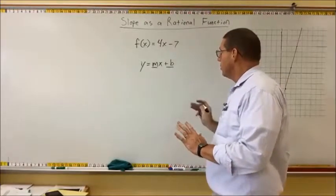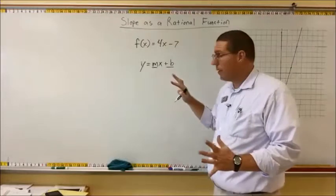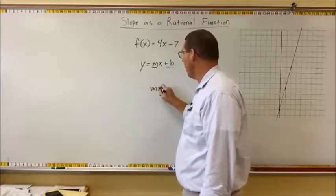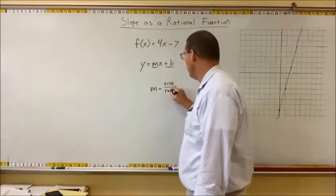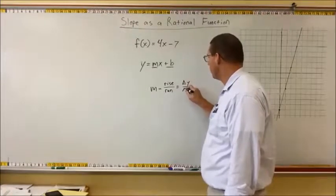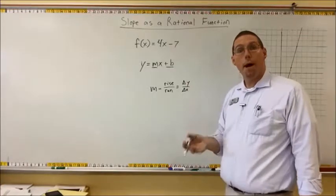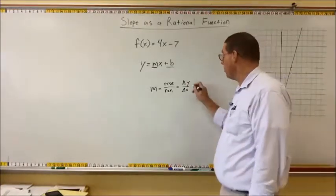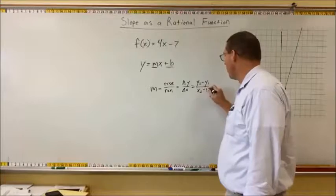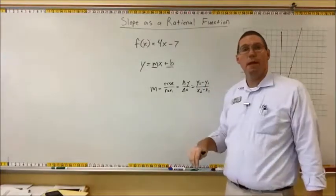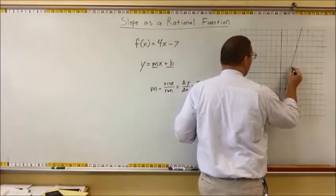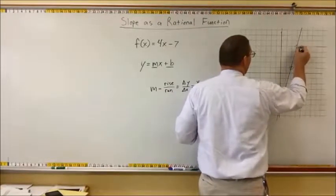But here's what I want to, you know, so this is obviously not a rational function. But if we go and think about what m is equal to, didn't you learn that m is equal to rise over run? That's one way you learned it. You also learned that m is equal to delta y over delta x, or change in y over change in x. But to calculate the slope, you were probably taught that slope is equal to y2 minus y1 over x2 minus x1.